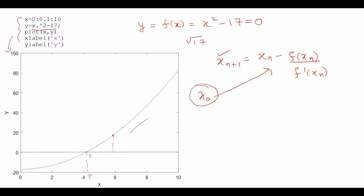What the Newton-Raphson iteration does is: starting from x₀ as my initial choice, it makes a tangent at that point and then sees where it crosses the x-axis. You can see where this tangent crosses the x-axis — that will be our x₁. So geometrically, where the tangent cuts the x-axis is x₁.